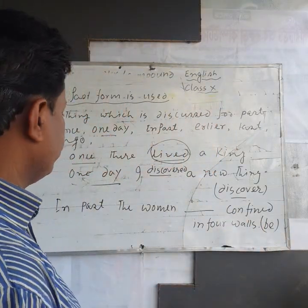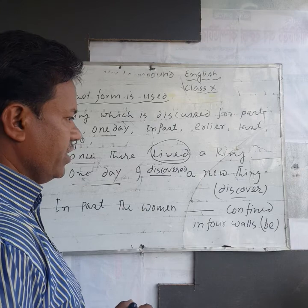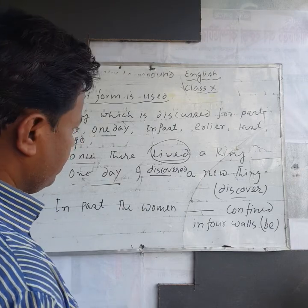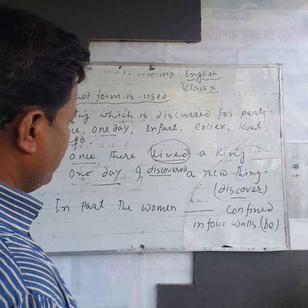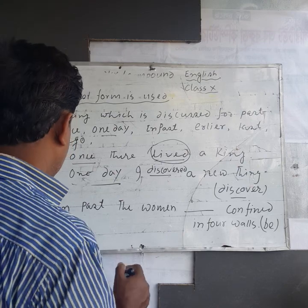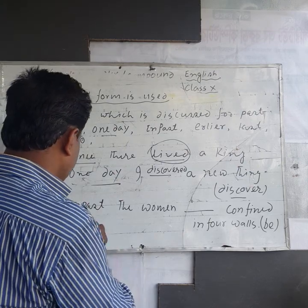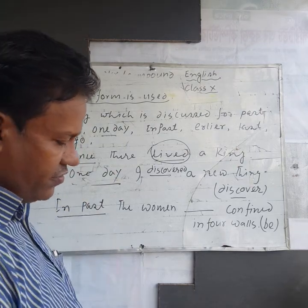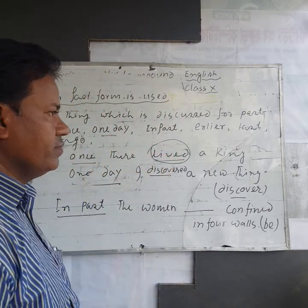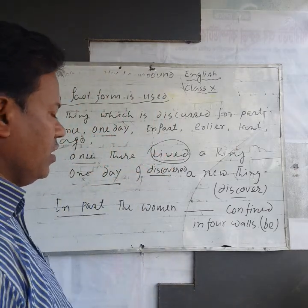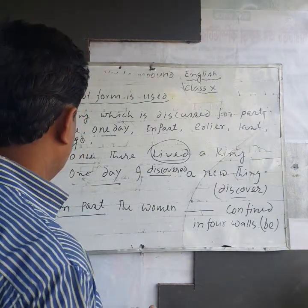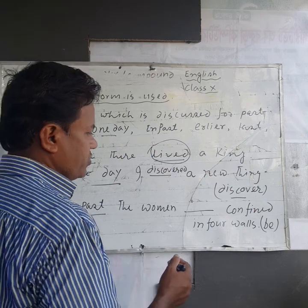Dear students, follow this sentence and then make a decision about what kind of sentence this is. 'In first, the women were confined in four walls.' You can see here 'in first' — the Bengali meaning is 'otite' — so you have to put here first form, because here is 'in first.'